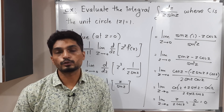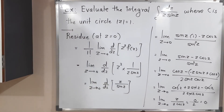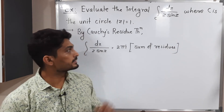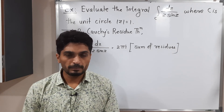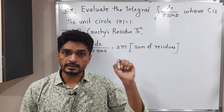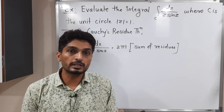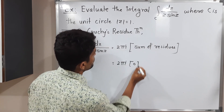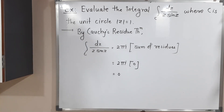Now applying Cauchy's residue theorem: the value of the integration equals 2πi times the sum of residues inside C. There is only one pole inside the circle, at z = 0, and its residue is 0. Therefore, the integral equals 2πi × 0 = 0. The value of the integration is 0. Thank you. Bye-bye.